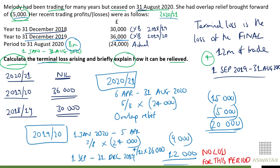Therefore, our total terminal loss is £20,000. The question also asks us to briefly explain how the terminal loss can be relieved, and there are two ways it can be relieved.